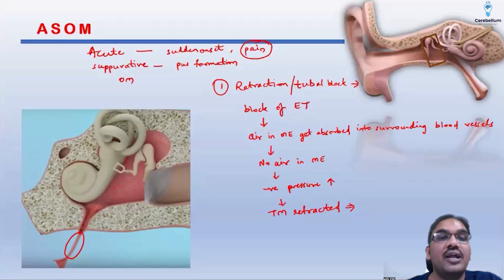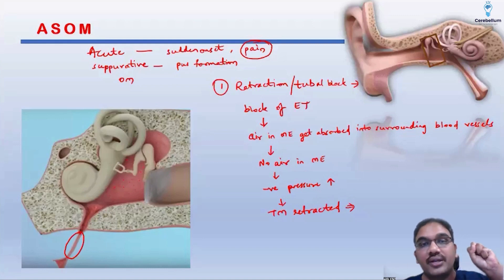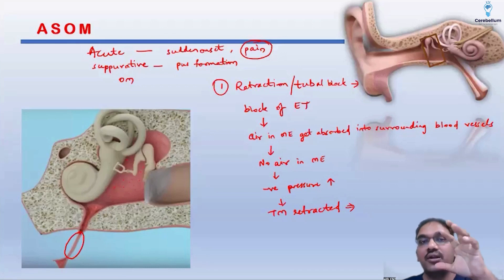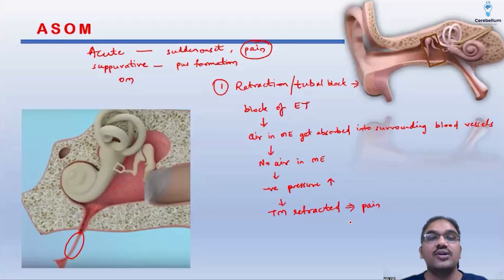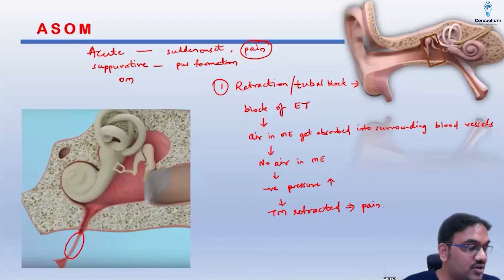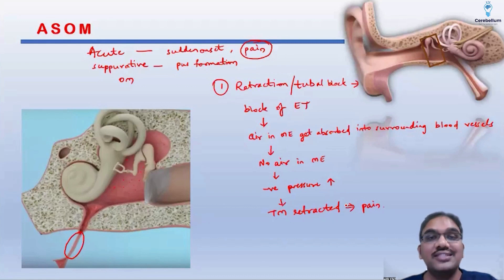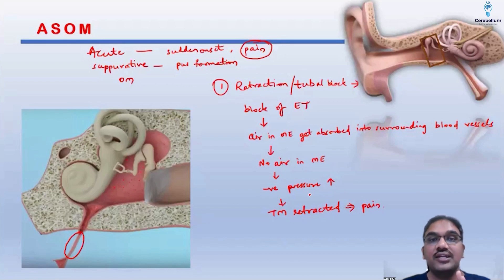Due to the retraction of the tympanic membrane — a forcible retraction — due to the negative pressure in the middle ear, which is in turn due to the block in the Eustachian tube, this forcible pull of the tympanic membrane will cause severe pain to the patient. That's why the patient will come to you with a complaint of pain. This is about the stage of tubal block — the patient will be complaining of pain.